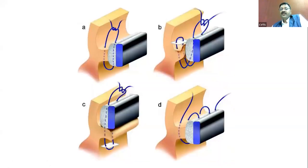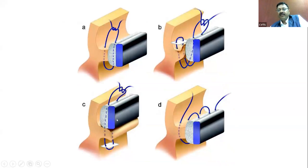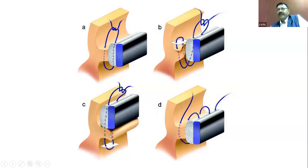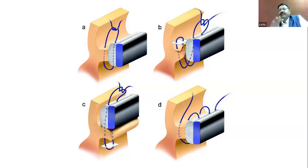Suturing technique also matters. Techniques A, B, and D place the valve intra-annularly. Only technique C — mattress suture with pledgets on the ventricular side — places the valve in supra-annular position. When dealing with a small aortic root, we must focus on this technique. If you choose a prosthesis designed for supra-annular placement but use an everting mattress suture, you will be unable to fit the prosthesis inside the annulus.